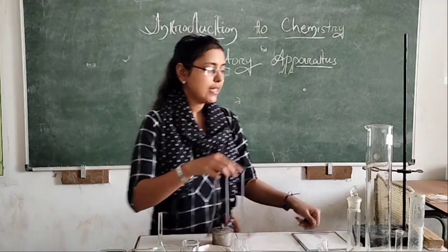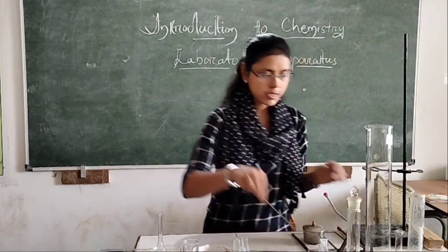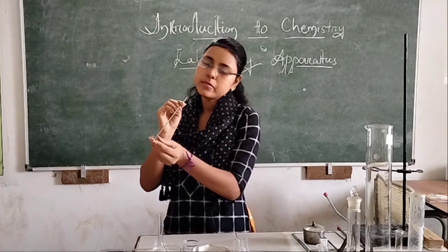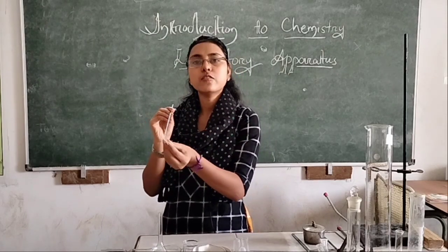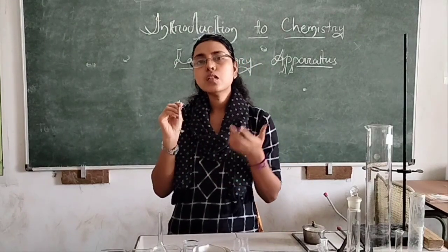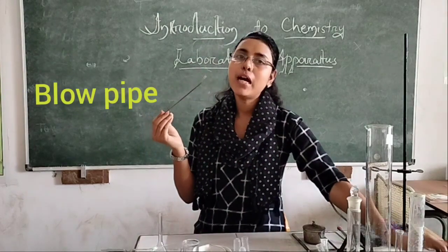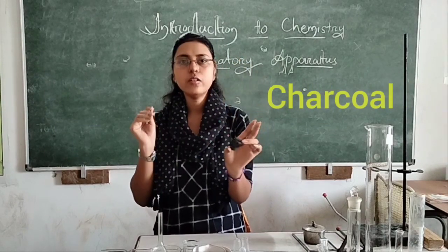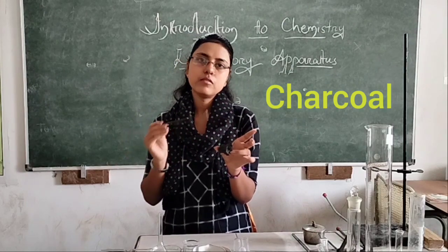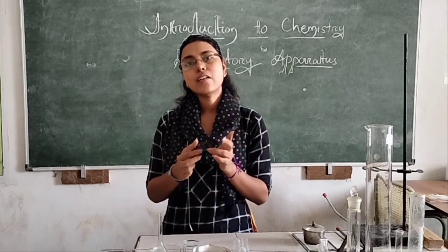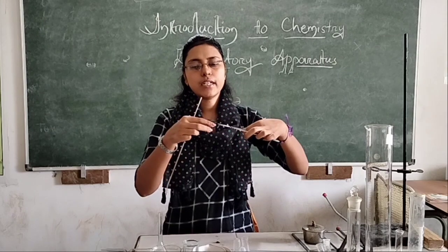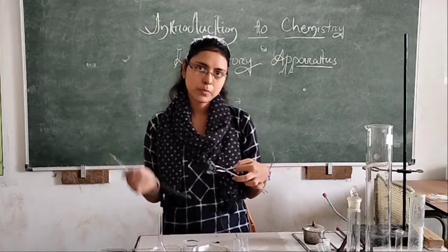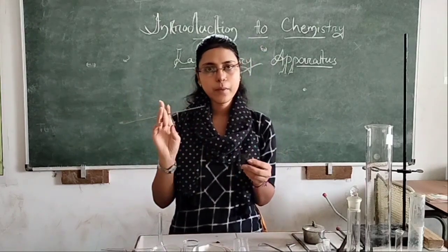The next apparatus is used to blow air. From one end we blow air and observe the effect at the other end. It is used in the charcoal cavity test, and it is called a blow pipe. This blow pipe is used in the charcoal cavity test. In this charcoal block we keep our organic or inorganic compound and perform the charcoal cavity test — we hold the charcoal with tongs and blow air through the blow pipe to continue the experiment.